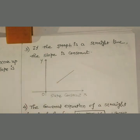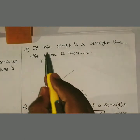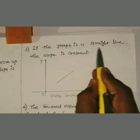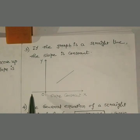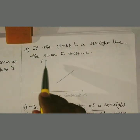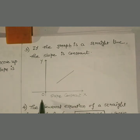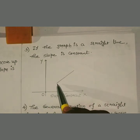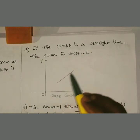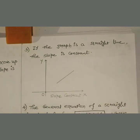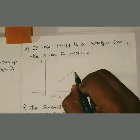Third type of graph: if the graph is a straight line, the slope is constant. Here you can see this is your x-axis, this is your y-axis. The graph is a straight line — this is called the straight line graph.